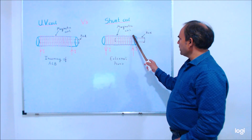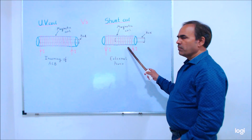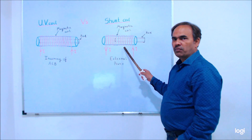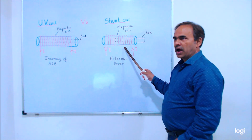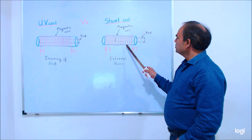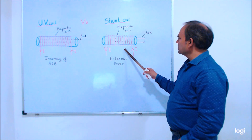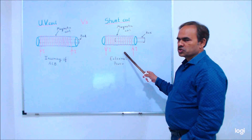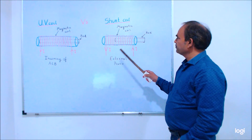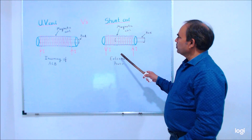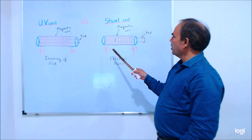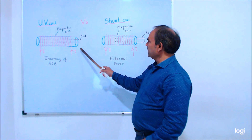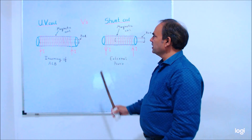The shunt coil protects from high current. This high current may come from a ground fault or a short circuit. Now we can see the similarities between the UV coil and the shunt coil.